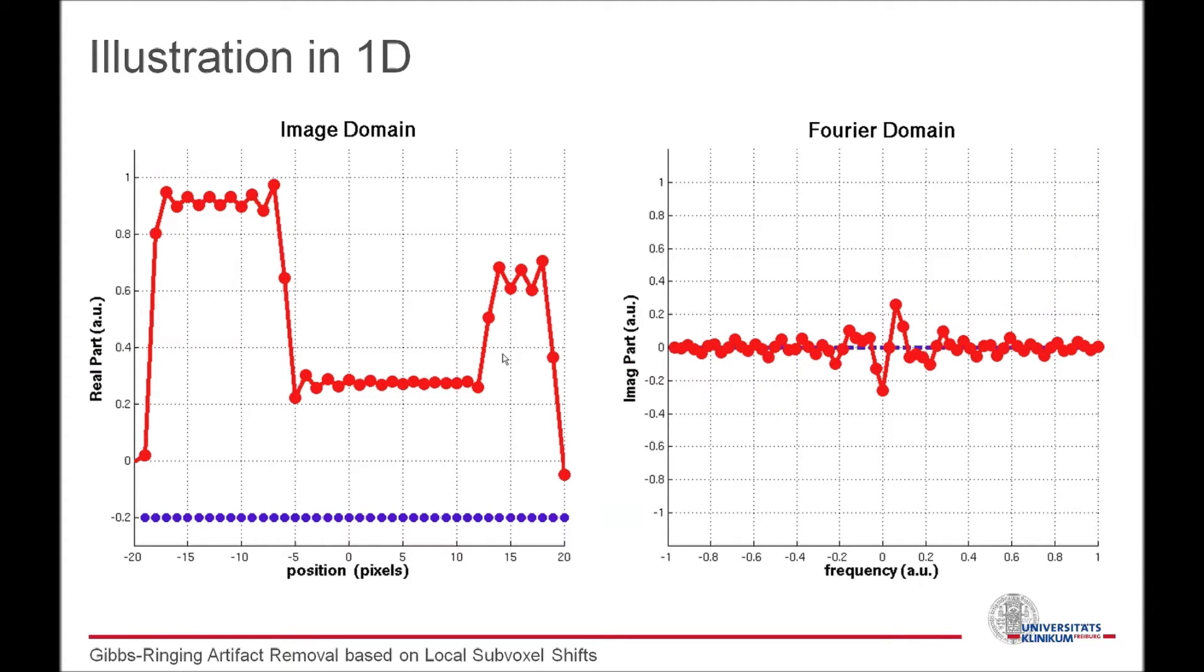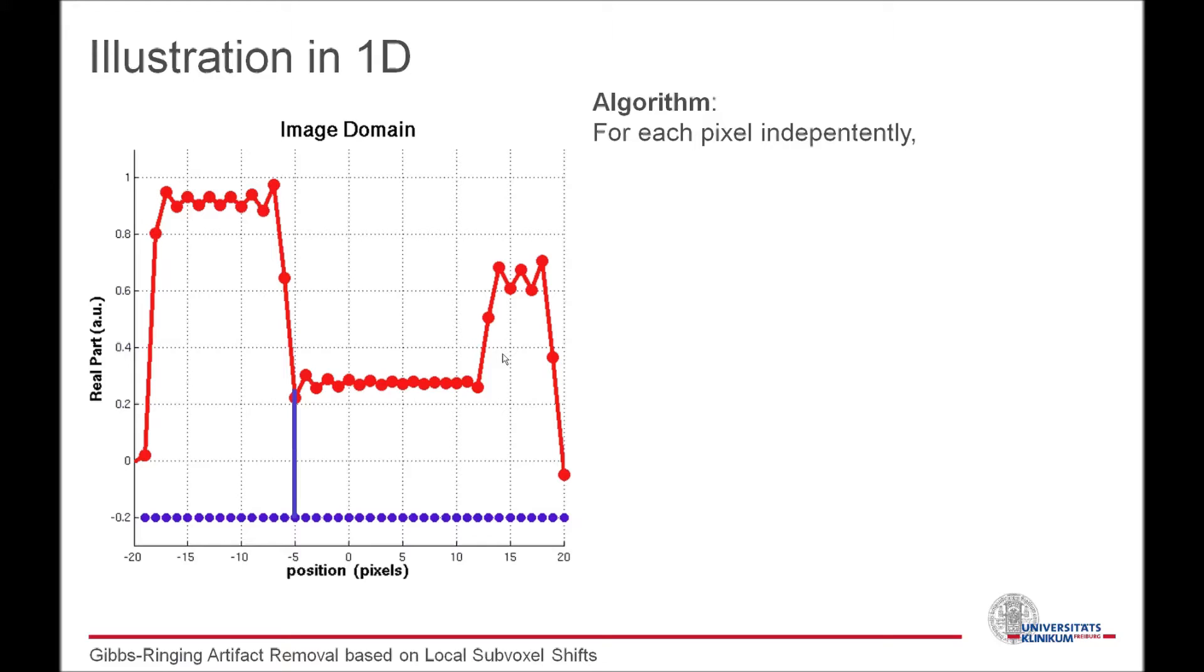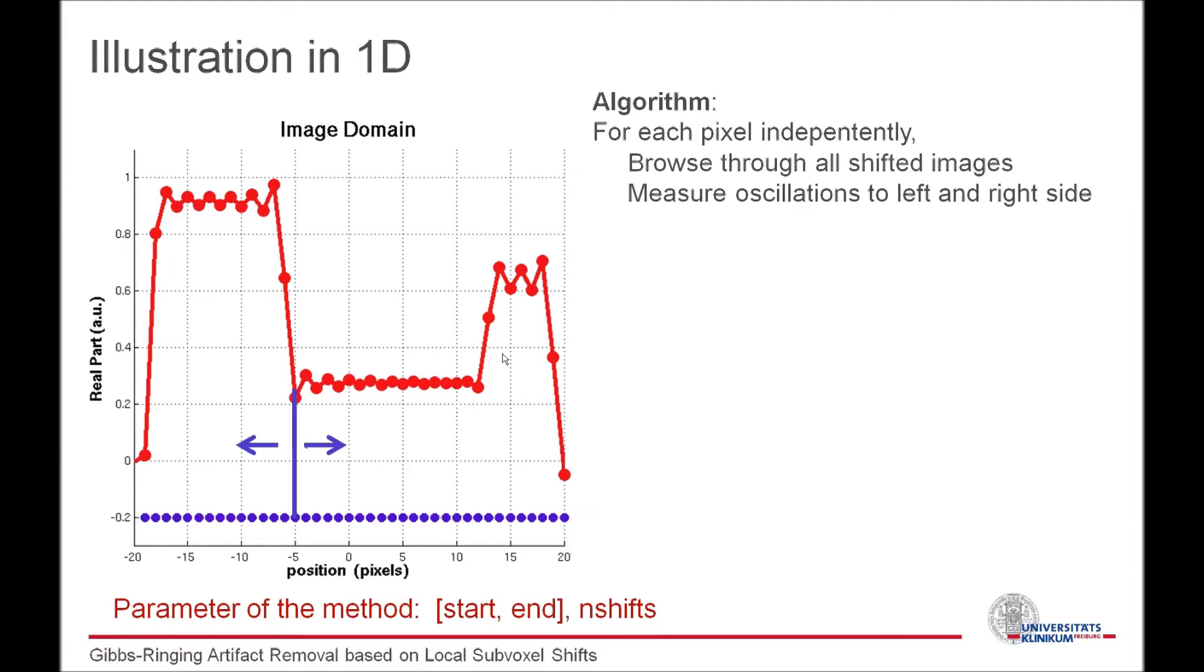Let's for example look at this blue pixel at the original grid down there. Now we browse through the whole set of generated shifted images as illustrated in this animation, and we concentrate only at this blue point. For all shifts, now we measure the ringing using some kernel sensitive to oscillations, for example the sum of absolute differences in the neighborhood. Because the edges themselves also contribute to the sum, we introduce two features here. First, we measure the oscillations to both sides individually, and take the smaller value of the two. So in a sense we are always looking away from the edge, such that we are not disturbed by the edge itself.